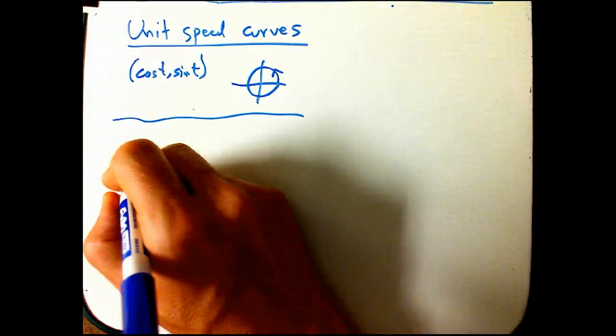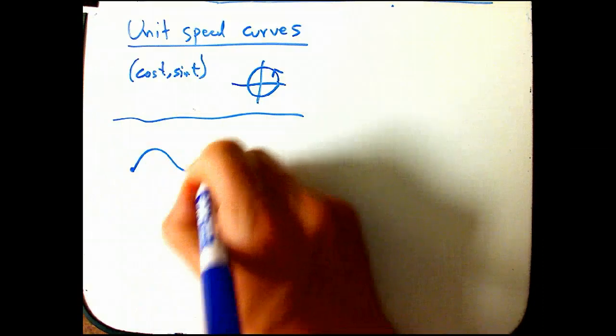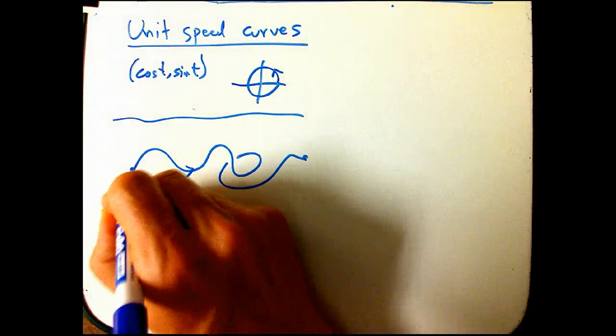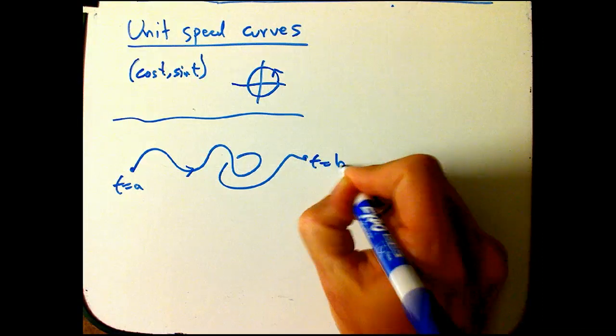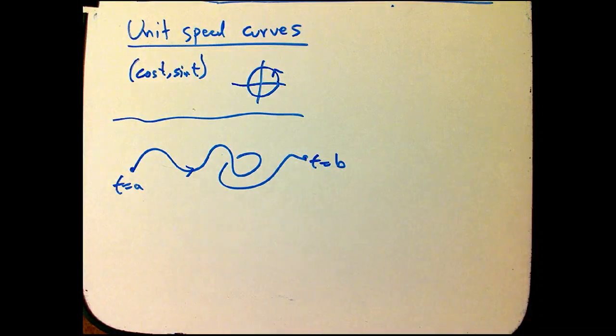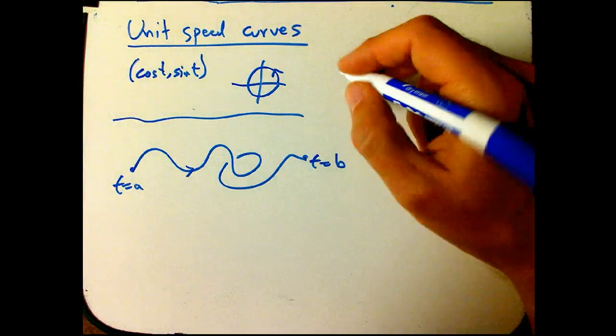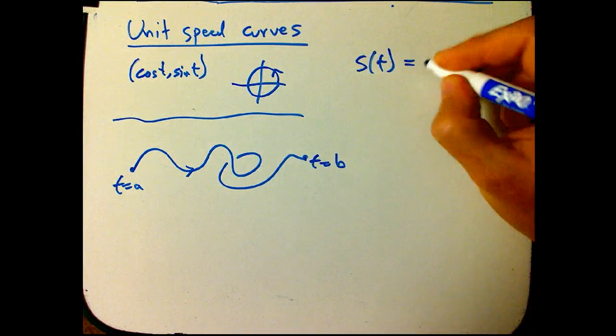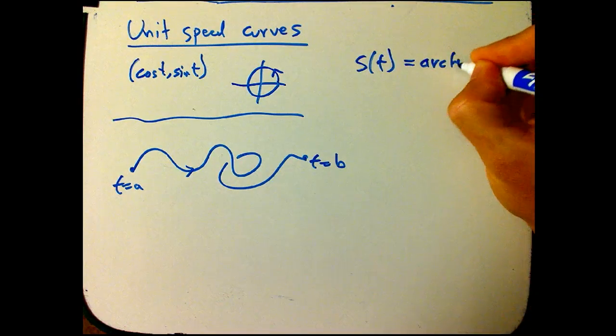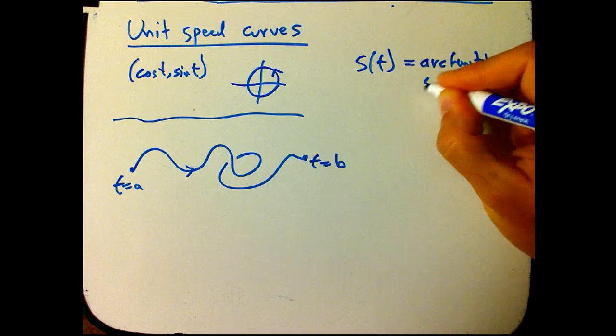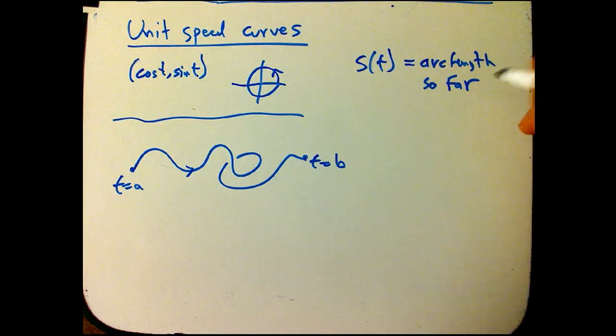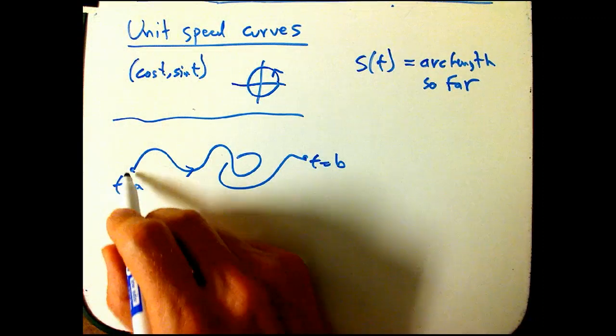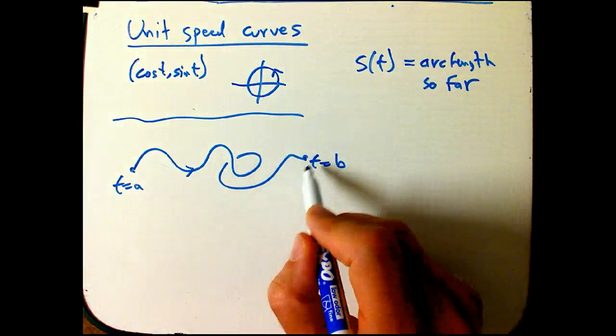But I want to think about a general curve going from t equals a to t equals b. And I want to bring in something that's really important, and that's not just the length of the curve as a number, but what's called s of t. We'll call that arc length so far. This is a function that starts at the start of the curve, let's say at t equals a, and just records as you go along the curve how far you've gone.